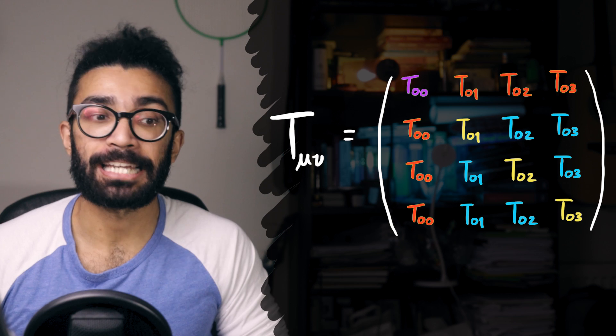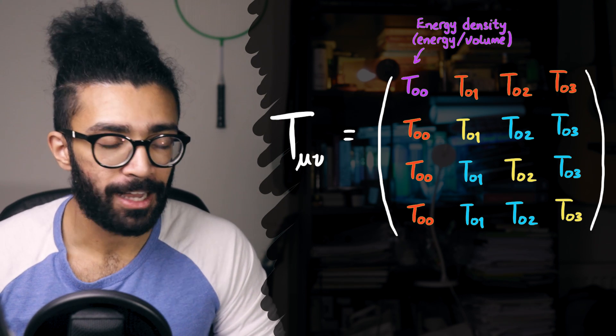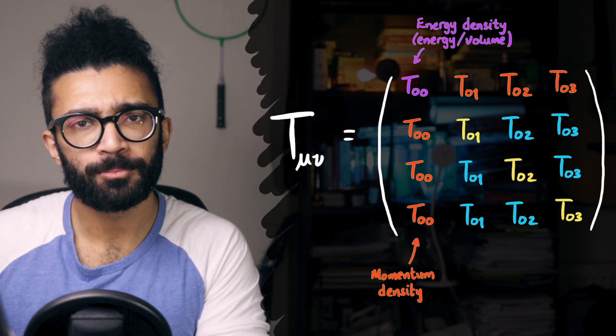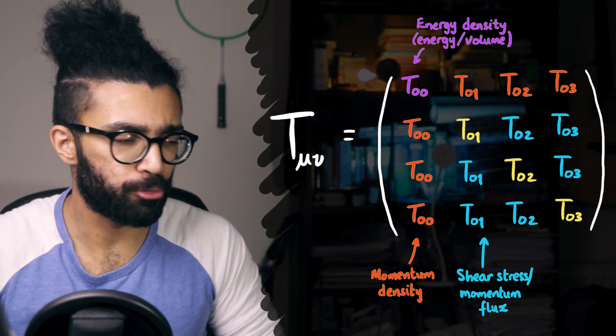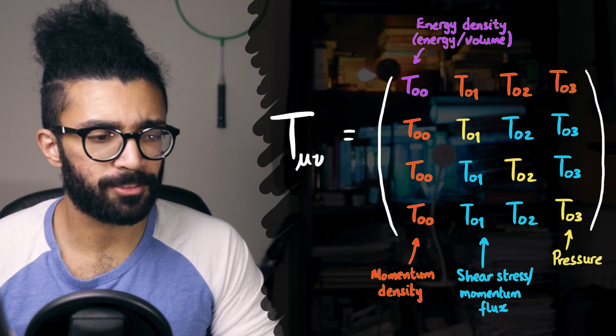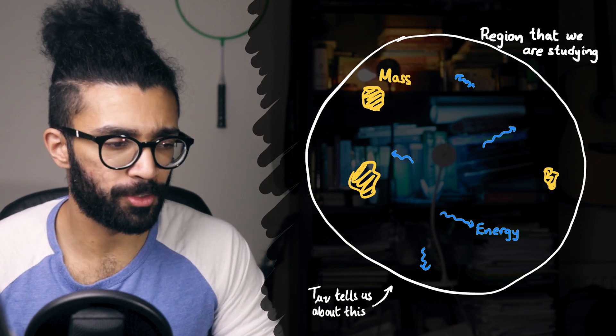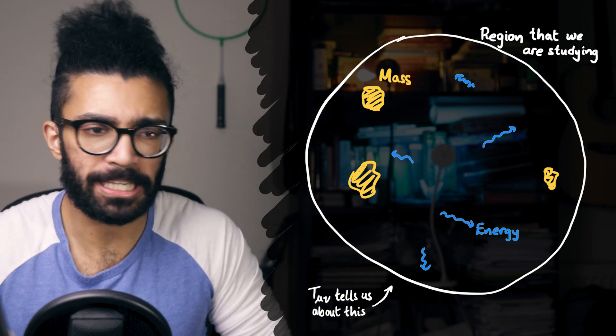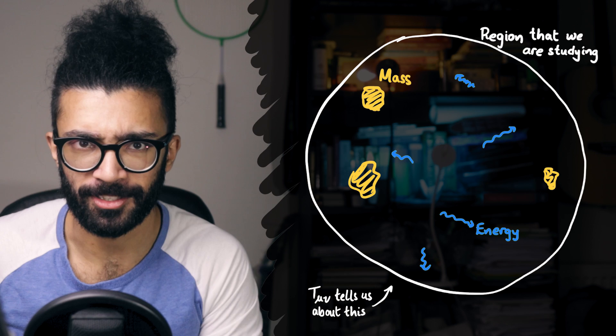For example, there's a term that looks at the energy density in that region, how energy is distributed over a certain volume, as well as momentum density terms, and shear stress terms, and pressure terms, which all sound rather complicated, but essentially just the distribution of stuff and energy and how it moves around and how it is existing in the region of spacetime that we happen to be considering.